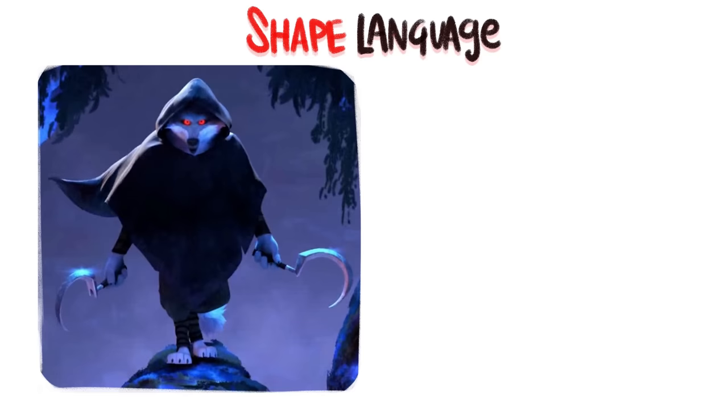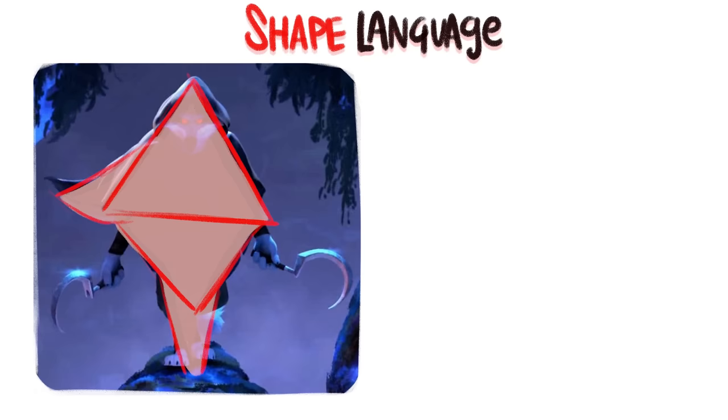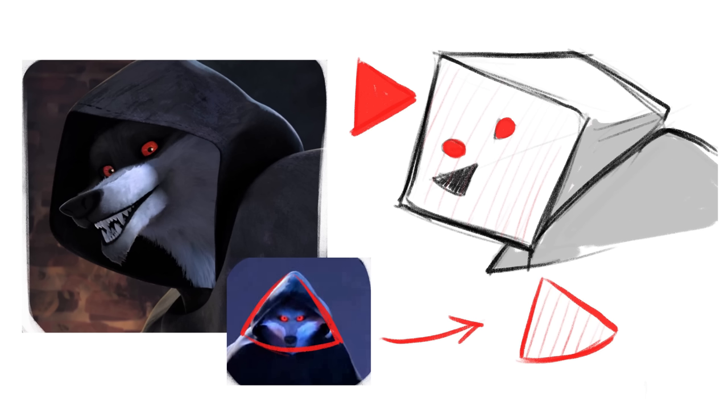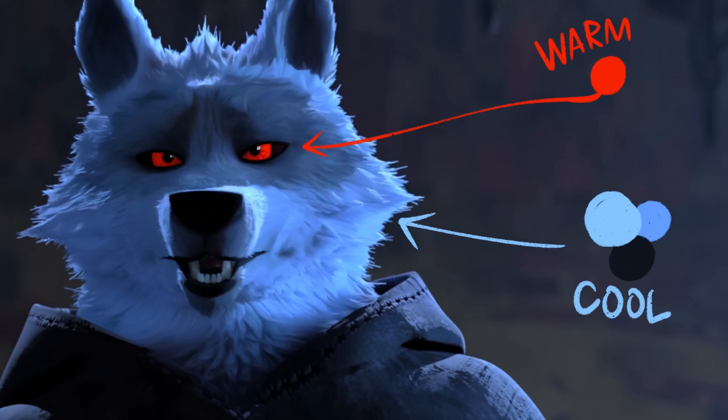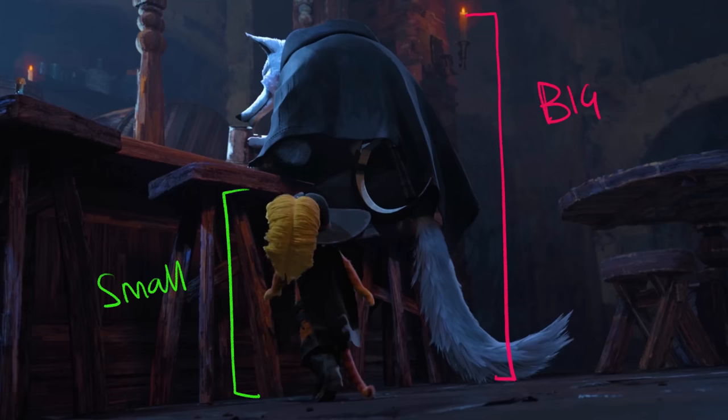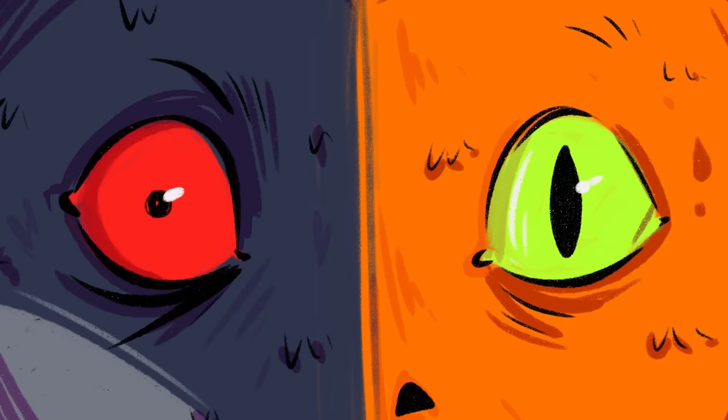I don't know if the character designers were doing all these things willingly or intuitively, but you can see why this character design works. The concept of shape language is cooked in through both minuscule and major ways — the overall design is triangular in nature, with many sharp elements. Then there's the contrast of coolness and warmness in the character, contrasted with the main character: big versus small, warm Puss versus cold Death. This complete contrast is what made Death visually appealing.